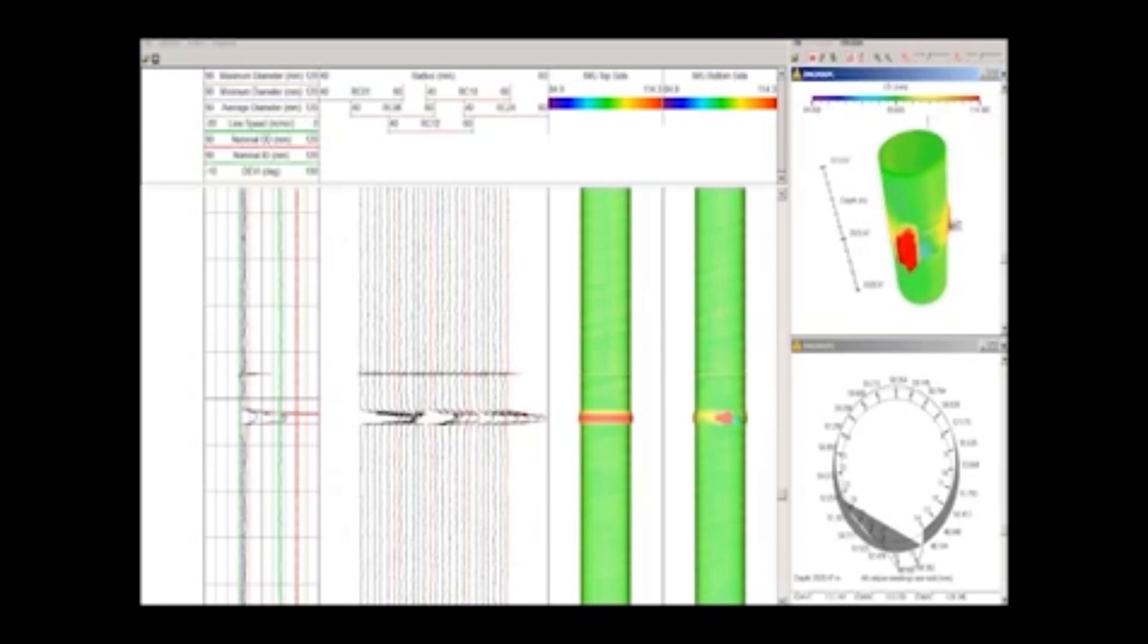In this example, the on-site engineer inspects the log for any potential integrity issues or anomalies using the 3D rotational facility and cross-sectional plotting.